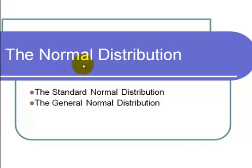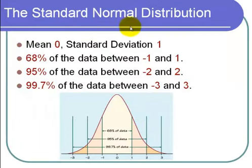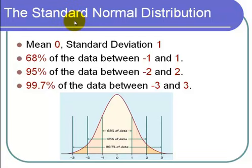This is a video on the normal distribution. I'll be talking about the standard normal distribution and also the general normal distribution. The standard normal distribution has a few different names — a lot of people know it as a bell curve, and some people know it as a Gaussian curve — but we're going to be calling it the normal curve or the normal distribution. The standard normal distribution has a mean equal to 0 and a standard deviation equal to 1.